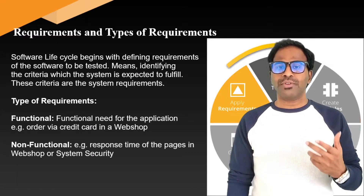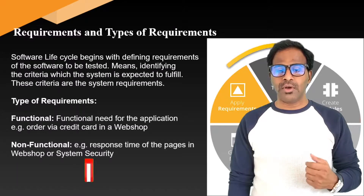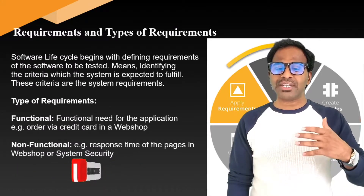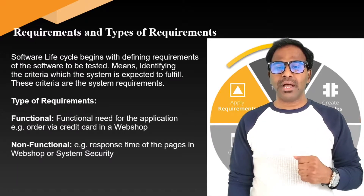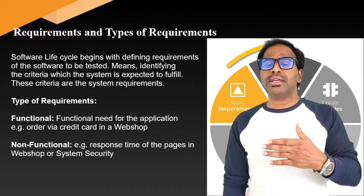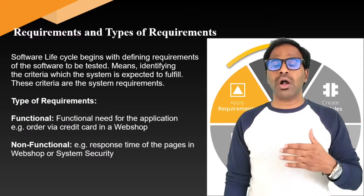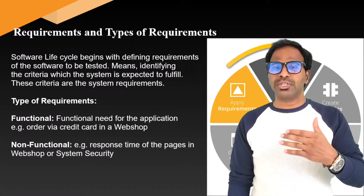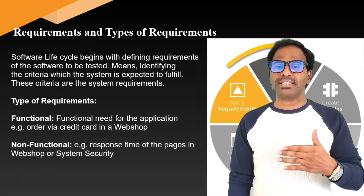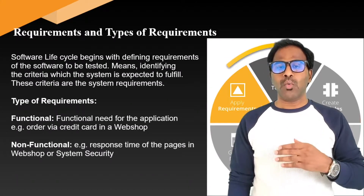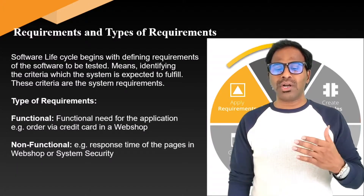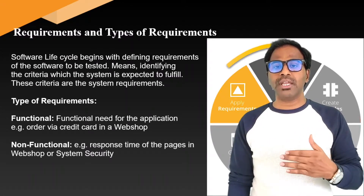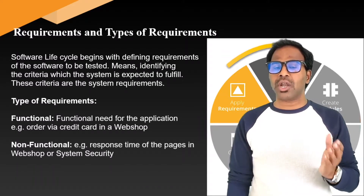There are two different types of requirements: functional and non-functional. Functional requirements are the functional needs of the application — for example, in an e-commerce site, if you want to order a product you can do so using a credit card or cash; these options are functional needs. Non-functional requirements include things like the response time of a page or the security rules applied to the login.